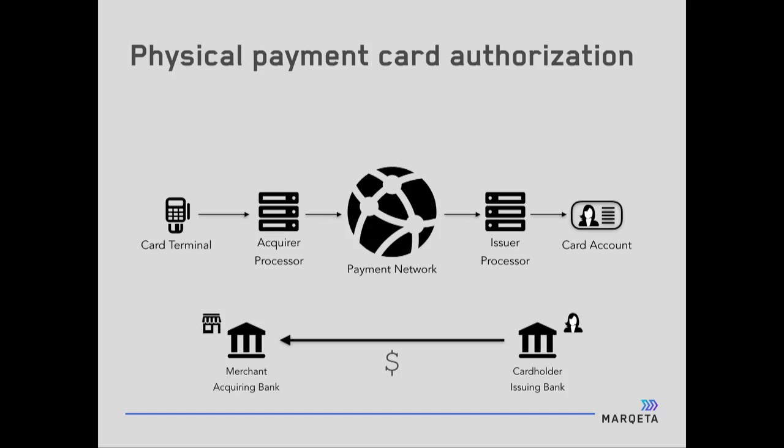Let's talk about the technology underneath and what's happening. Starting at the left, a physical payment card authorization: you take your card and put it in a card terminal at the merchant's location. This terminal sends that transaction online using a protocol called ISO 8583 — it's pretty gnarly, I won't get into that today. The transaction has simple things like the amount, which merchant, and a bunch of other information. The acquirer processor takes a look at that and decides which payment network this is — Visa, MasterCard, etc. — basically determined by the first number on the card.